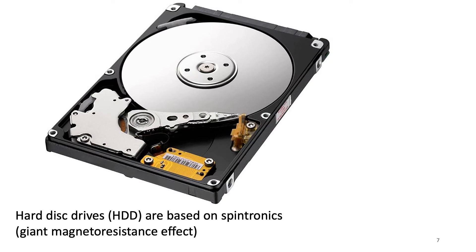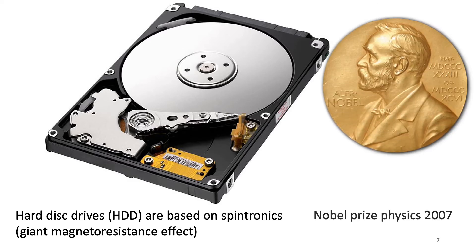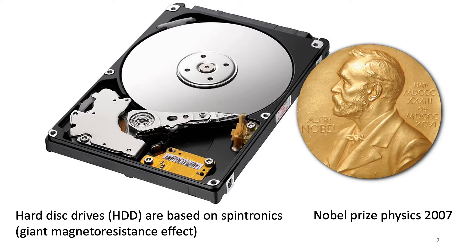Actually, spin-based computer memory is already quite widespread. For example, hard disk drives store information in the orientation of spins in a magnetic layer, and they read it using the spintronic effect called giant magnetoresistance. The use of this effect allowed to greatly increase the information storage density and gave a strong boost to the development of electronics and spintronics. For this, the Nobel Prize in 2007 was awarded.